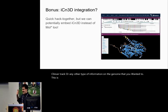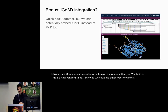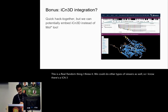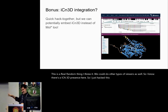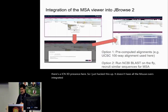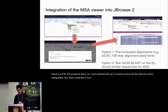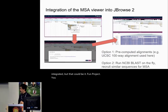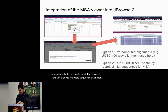We can also do other types of viewers. I know there's an ICN3D presence here, so I hacked this up — it doesn't have all the mouseovers integrated but that could be a fun project. You can also do multiple sequence alignment views in JBrowse.